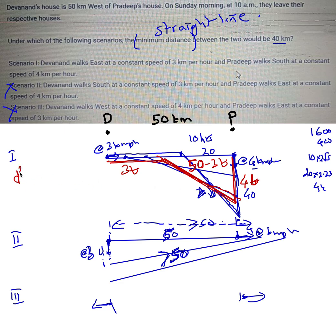I am writing it in terms of d². So d² is (50 - 3t)² + (4t)². When I open this out, this is going to be 2500 - 300t + 9t² and 16t² would make it 25t². You can take 25 common and I will be left with t² - 12t + 100.